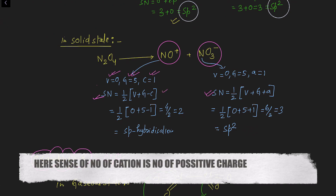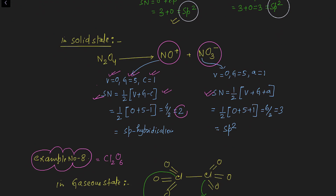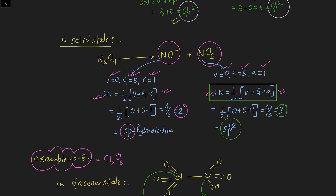After putting all values into the cation formula we get sp hybridization for nitrogen in NO+. For NO3−: monovalent atoms = 0, valence electrons of nitrogen = 5, anion charge = 1. Putting all values into the anion formula gives steric number 3, so hybridization of nitrogen in NO3− is sp2.